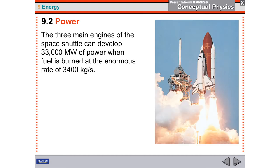You can also see here that energy is related to work. If the space shuttle is doing 33,000 megawatts of power, in order to do that, it has to use 33,000 megajoules or million joules per second. How do you do that work? You have to have the energy to do that work, and you're going to see that the fuel that's burned is 3,400 kilojoules of fuel per second in order to have 3,300 megawatts of power.